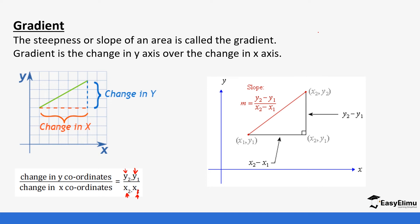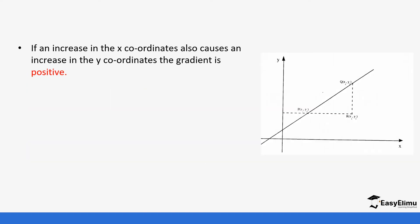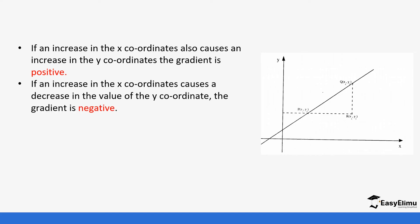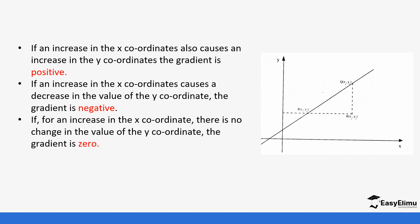We need the coordinates of both the x-axis and y-axis of at least two points to calculate the gradient of a line. If an increase in the x-coordinate causes an increase in the y-coordinate, the gradient will be positive. If an increase in x causes a decrease in y, the gradient is negative. If there is no change in y, the gradient is zero. For a vertical line, the gradient is undefined.